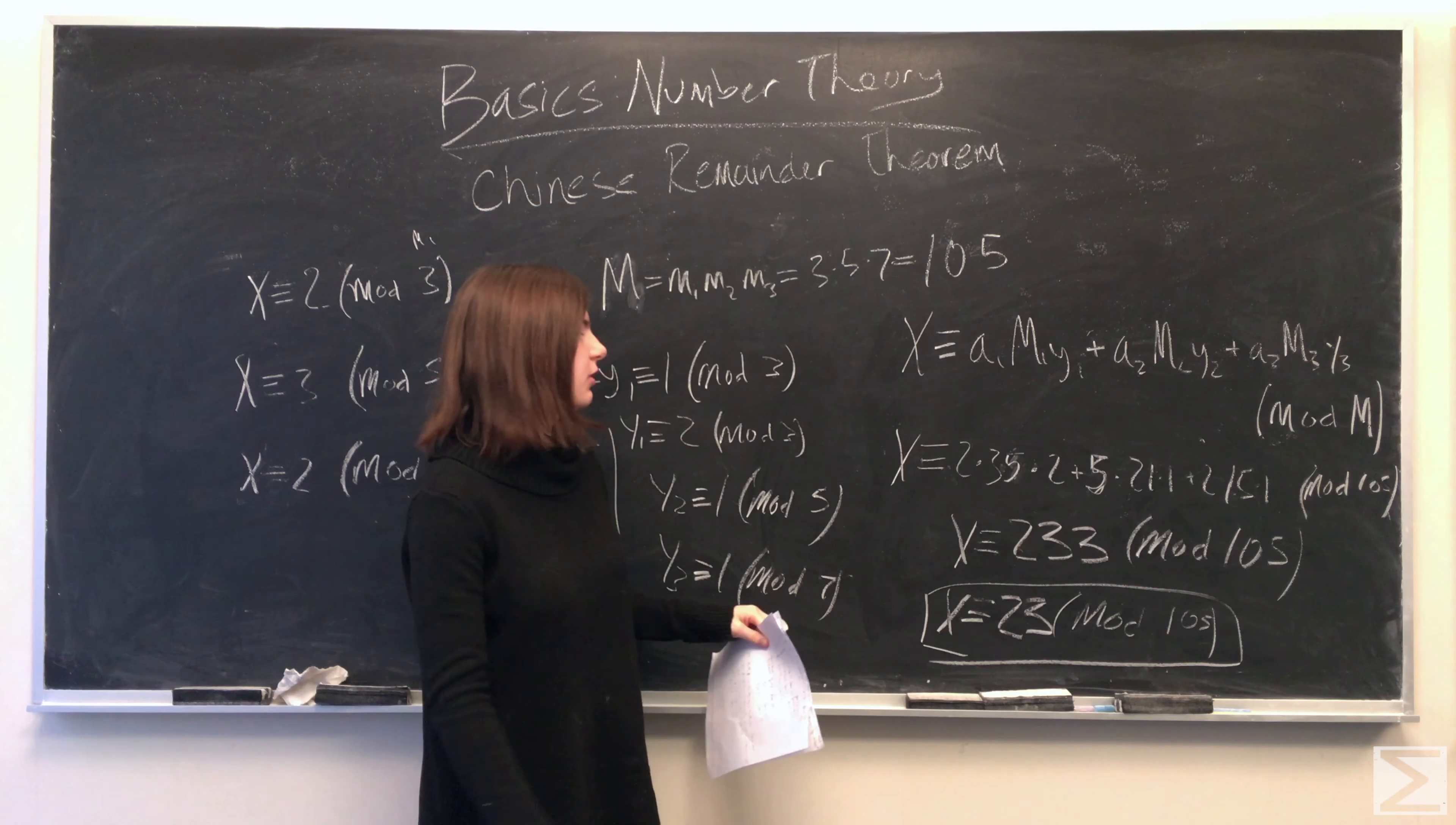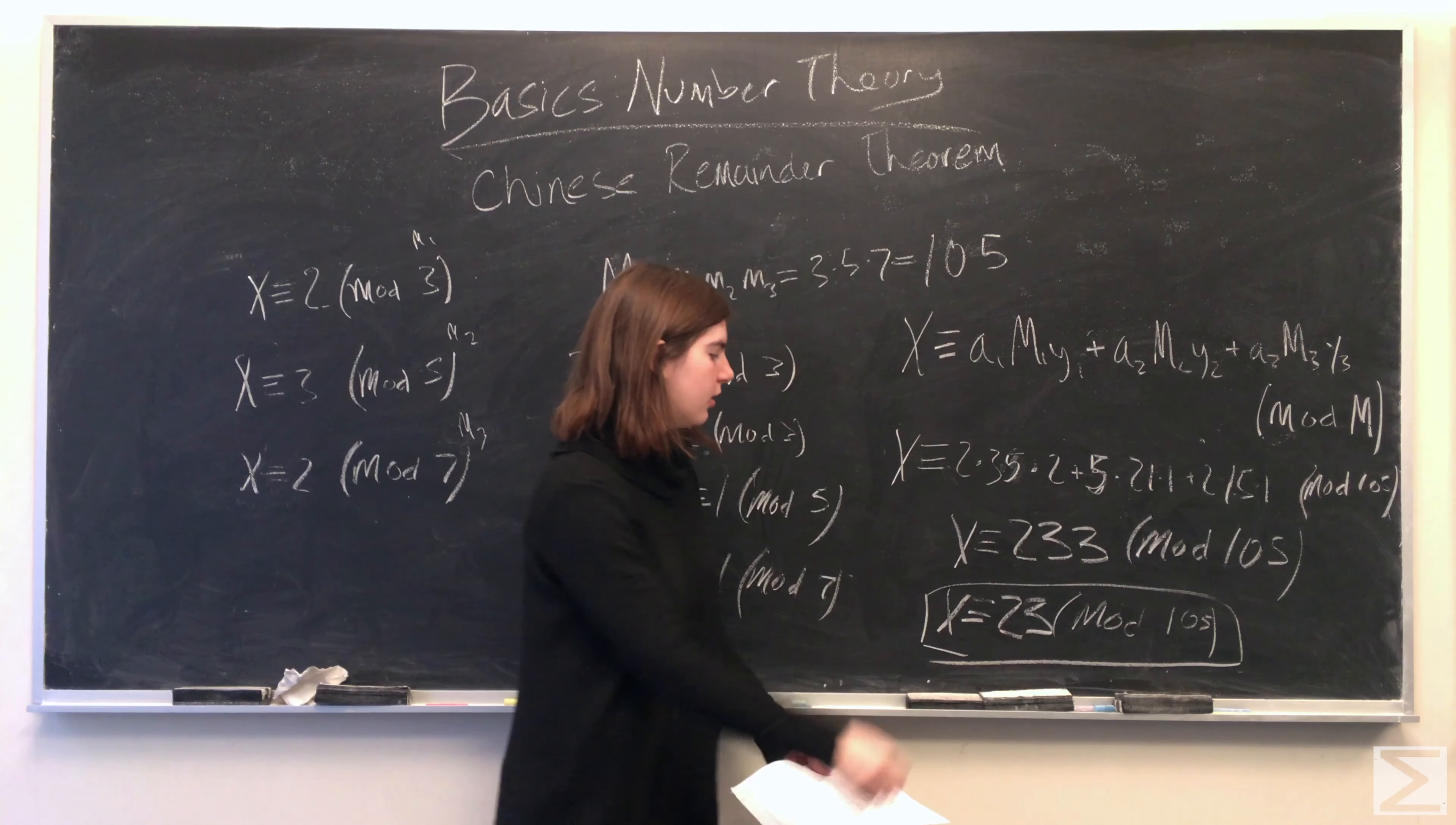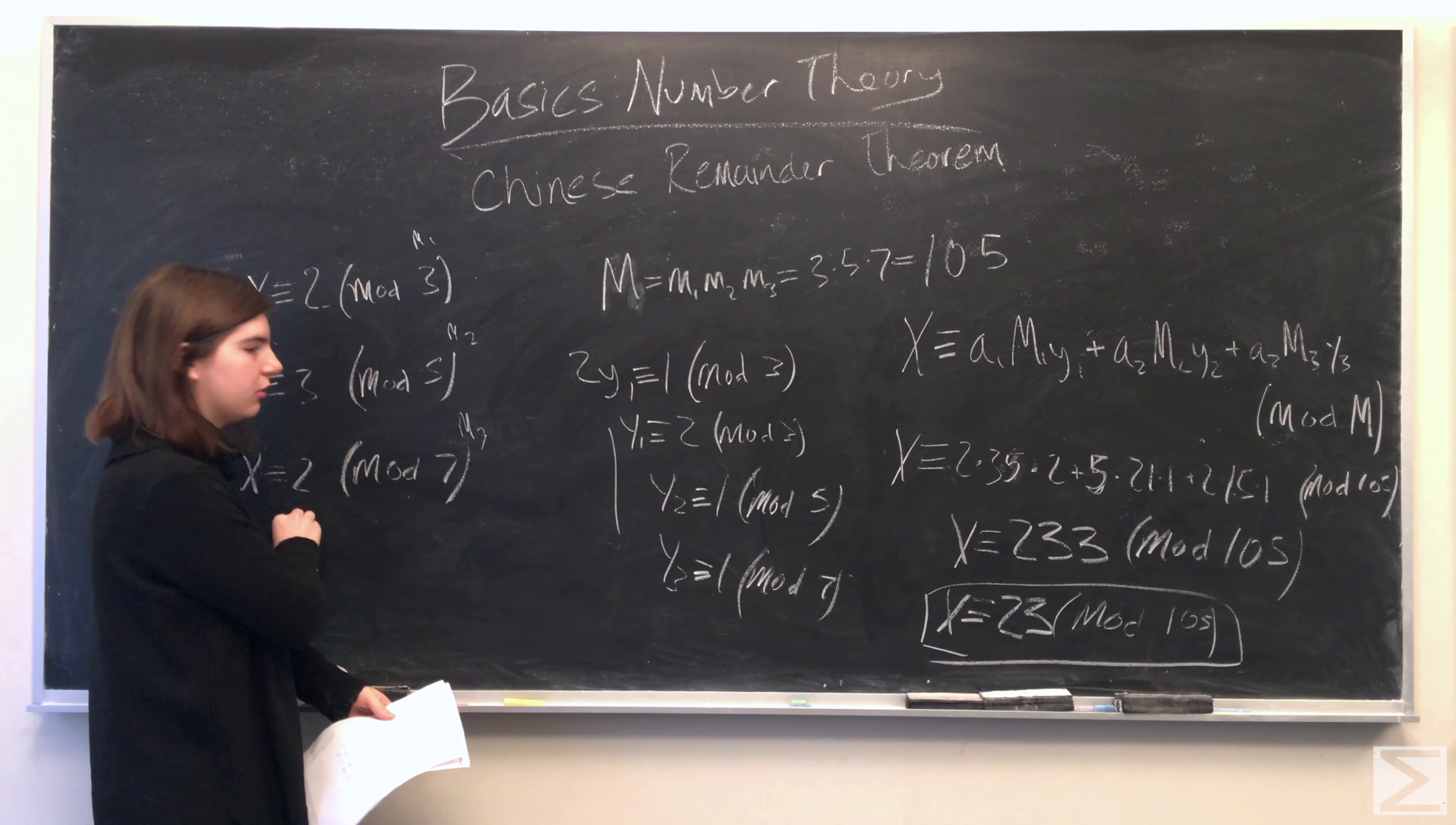So once we plug in our values and reduce, we're left with x is congruent to 233 mod 105. 210 is a multiple of 105, and that leaves a remainder of 23. So we're left with x is congruent to 23, and x equals 23 is our answer to the system of linear congruences.